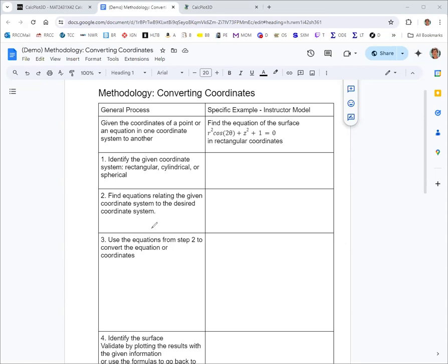In the example here, we have the equation of a surface, r squared cosine 2 theta plus z squared plus 1 equals 0, and we want to convert that to rectangular coordinates.